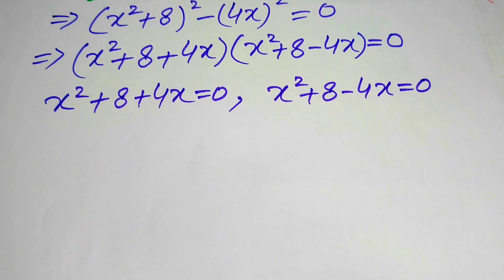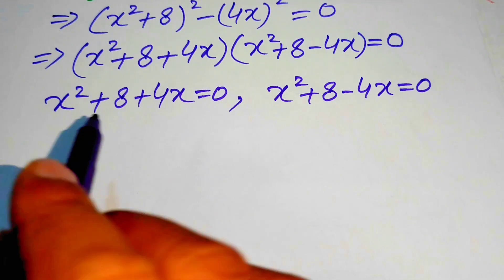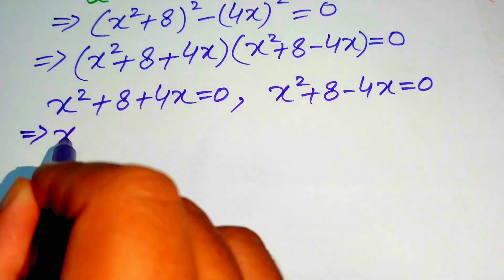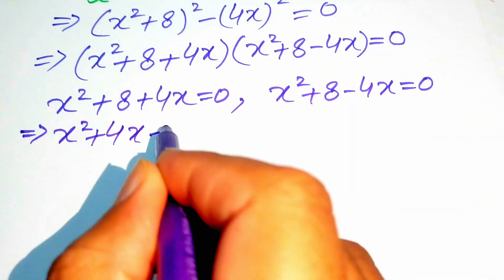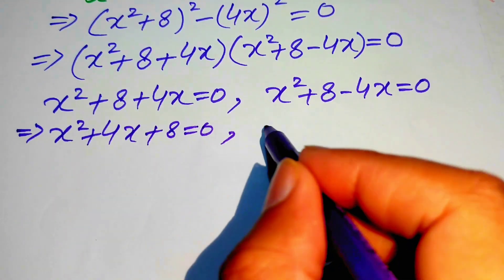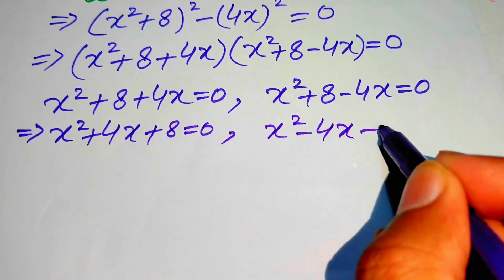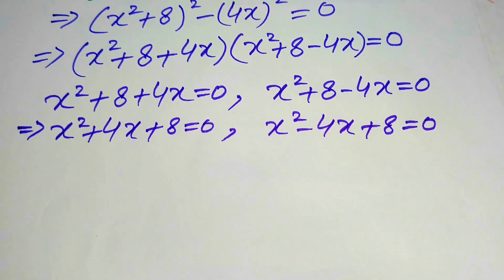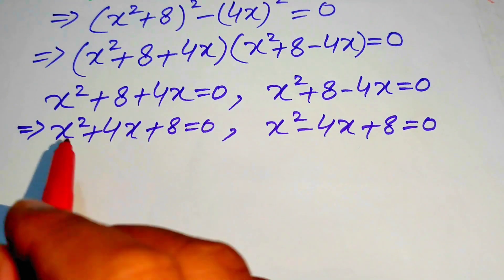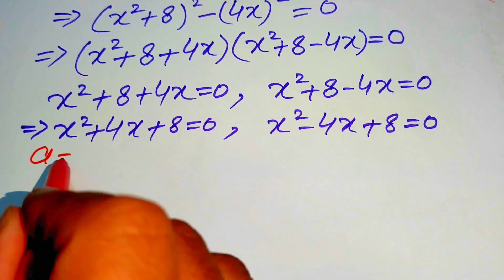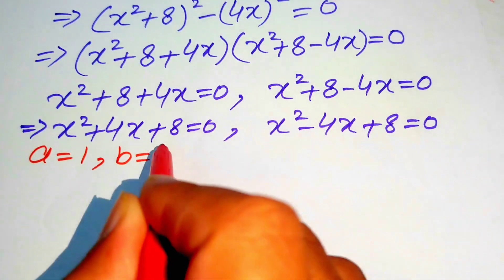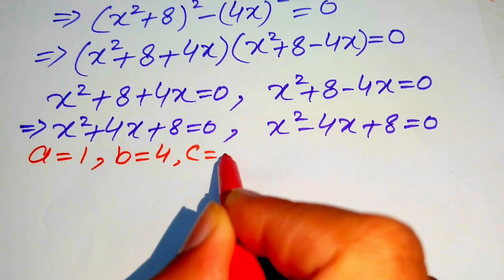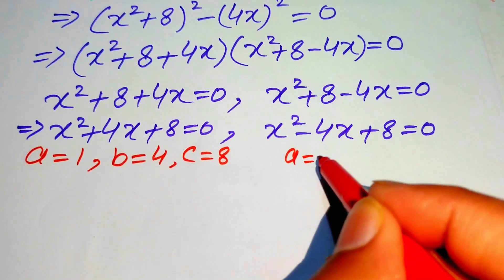We solve these two quadratic equations. Rearranging in standard form: case one is x squared plus 4x plus 8 equals 0, and case two is x squared minus 4x plus 8 equals 0. We use the quadratic formula to solve them. The coefficients for case one are a equals 1, b equals 4, and c equals 8.